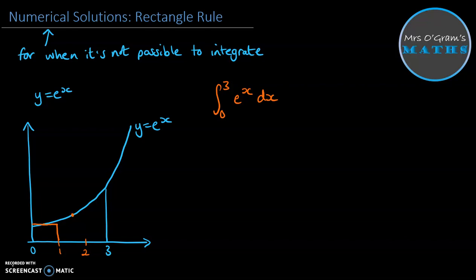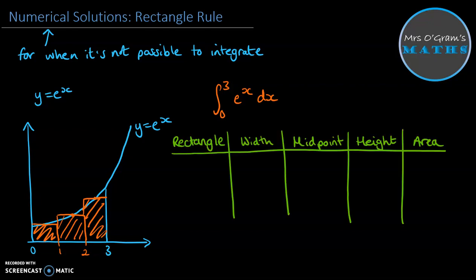And then the same with the next rectangle from 1 to 2. We go halfway between and we make that the top of our rectangle and find that area underneath. And then between 2 and 3, we go halfway, make that the top of our rectangle, find that area. Now, if we find all of the areas of those rectangles, we can add them up to get an estimate for the area under the curve. Now, it's a good idea to keep your working out orderly with these to keep track of what you're doing. So I've set up this table to keep track of it.